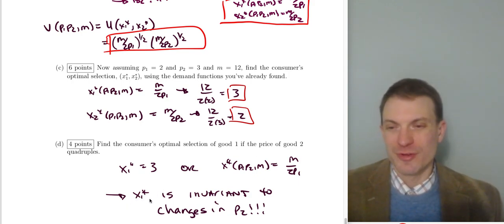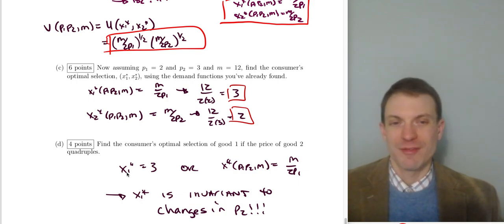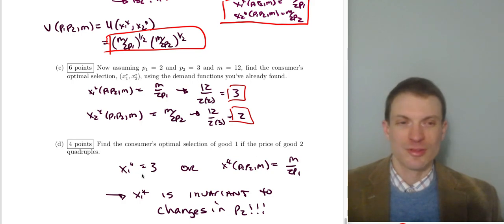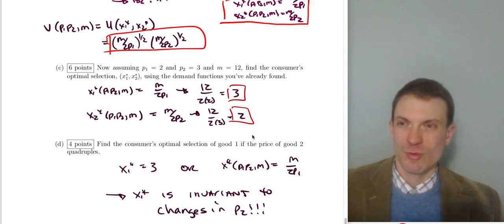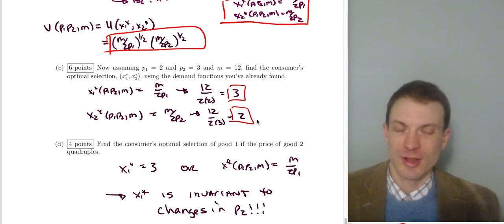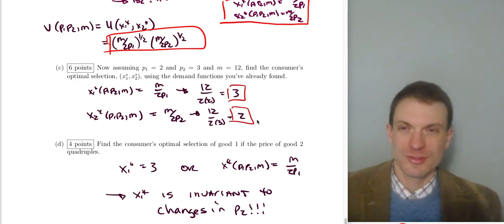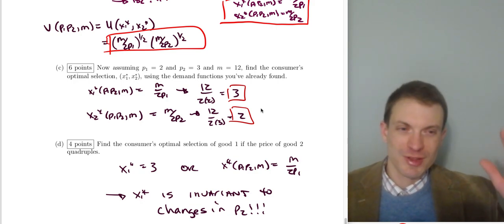Demand for good one, x₁* = m/(2P₁), is invariant to changes in the price of good two — a cool property of Cobb-Douglas. So demand before and after any price change for good two remains 3. That reaches the end of the walkthrough for this solution video. A sketch of the solution has already been posted on Canvas. Have a good night everyone.